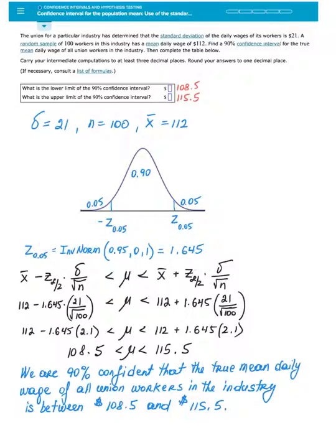Therefore, these two points that separate the middle 90% of data from 5% on the left and 5% on the right are negative 1.645 and positive 1.645.